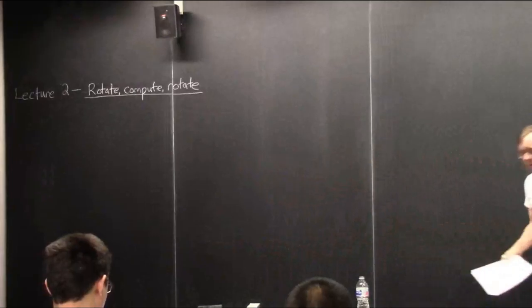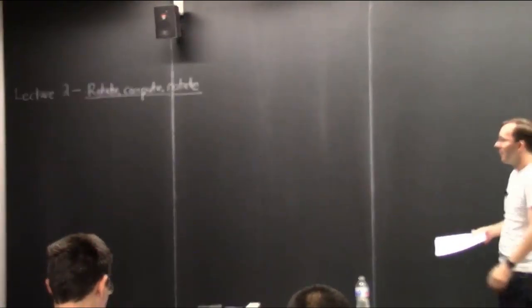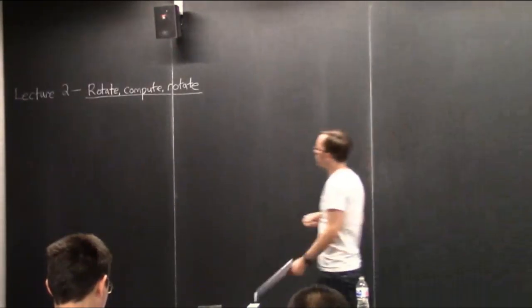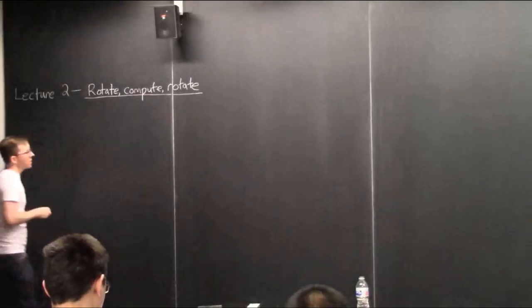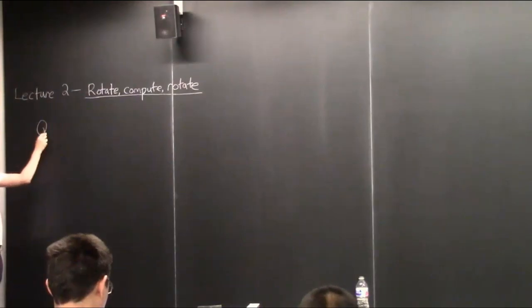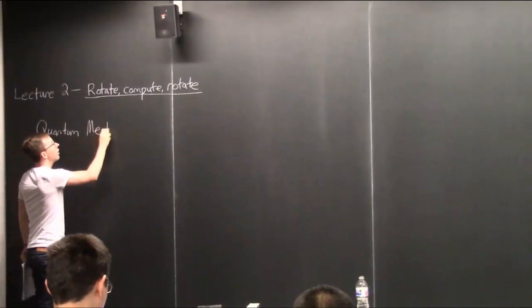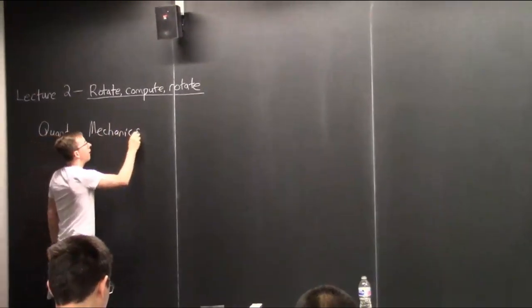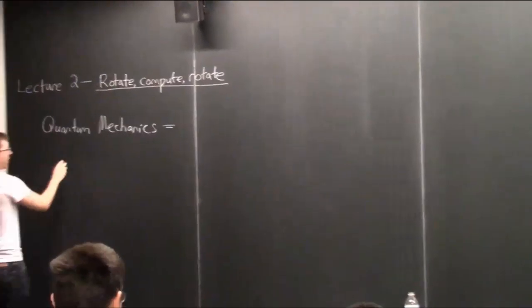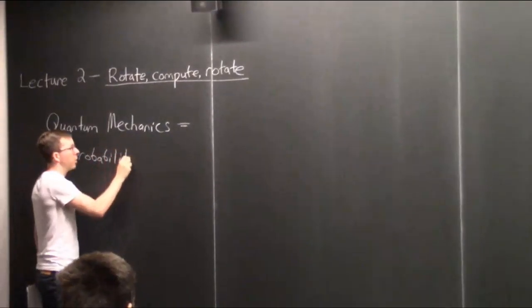Next lecture, lecture three, we'll actually properly get into the basics, like what is a qubit, and a vector, and so forth. But we'll start with some explanation like this. One thing I'll say at the beginning is a slogan for what quantum mechanics — the mathematical laws of physics governing small particles — is about. If this had to be summarized in a few words, it would be basically probability with minus signs.